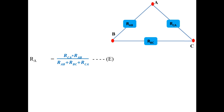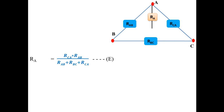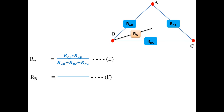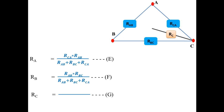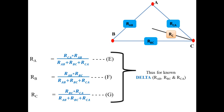So for the delta network with RAB, RBC, RCA, we now have the star network equivalents RA, RB, RC. We observe a pattern: RA is in contact with two delta elements RAB and RCA, so it equals the product of those two divided by the sum of all three delta elements. RB is in contact with RAB and RBC, so RB = (RAB × RBC) / (RAB + RBC + RCA). RC is in contact with RBC and RCA, so RC = (RBC × RCA) / (RAB + RBC + RCA). This completes the delta-to-star derivation.